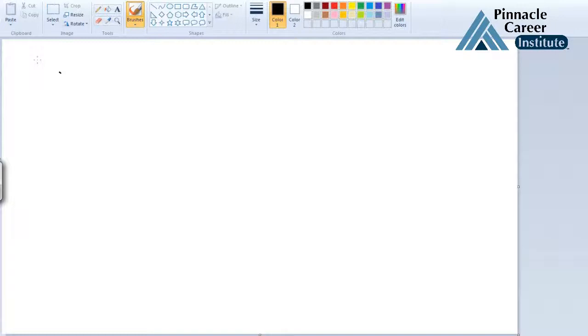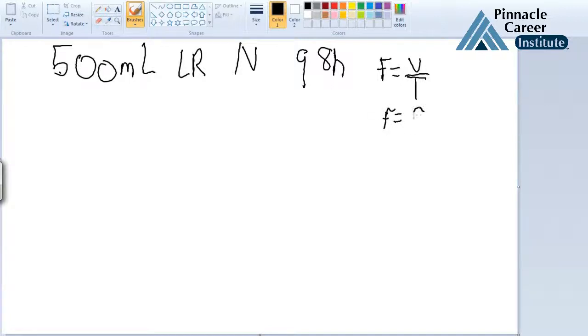We're going to look at finding the flow rate for orders to be administered by an infusion pump. Our problem is 500 milliliters LR IV every 8 hours. We're going to use a formula: F equals V over T, where F is our flow rate, V is our volume, and T is our time.